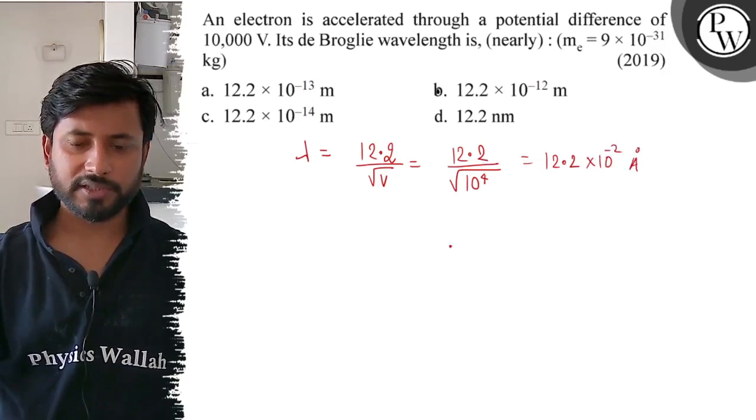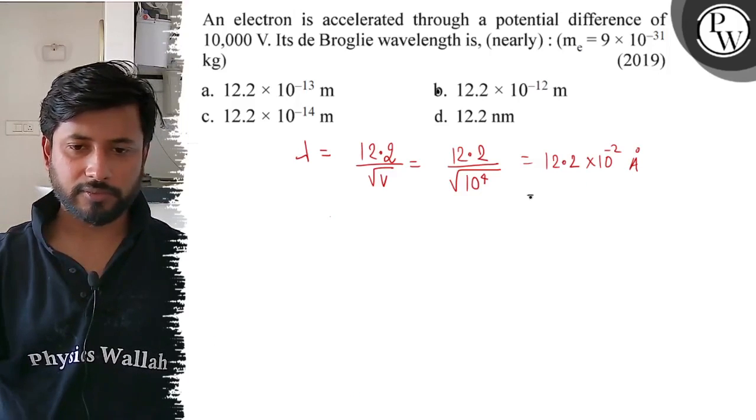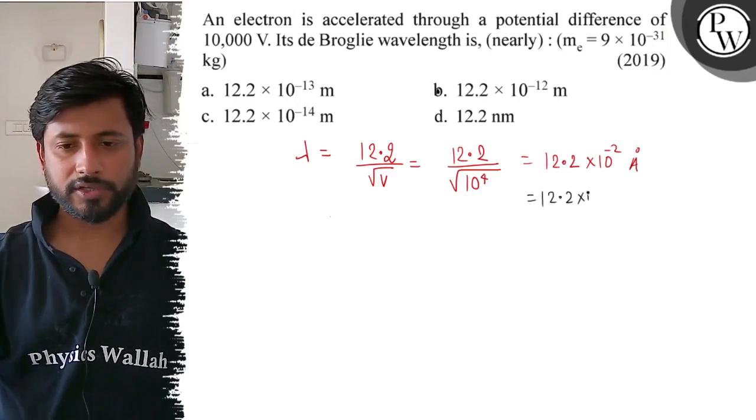Converting to meters, one angstrom is 10 to the power minus 10 meters, so finally this is 12.2 into 10 to the power minus 12 meters.